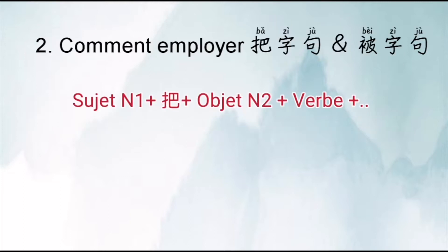Nous allons voir comment employer BA ZI JU. La structure, c'est : sujet + BA + objet + verbe, plus s'il y a d'autres particules ou d'autres objets.